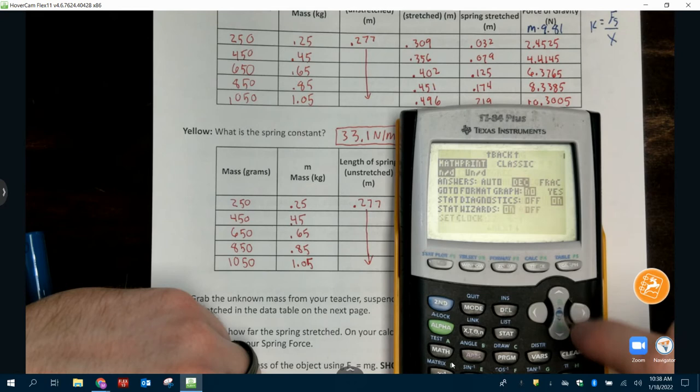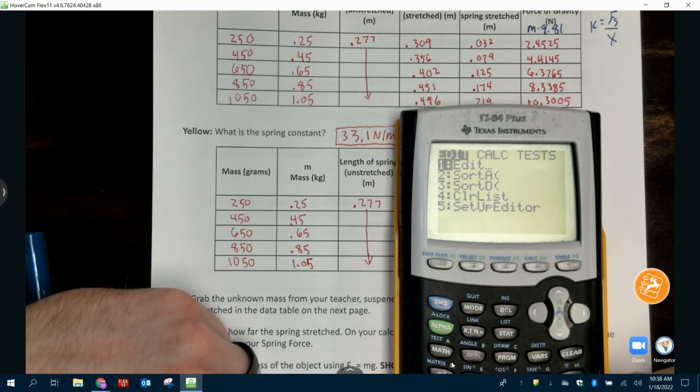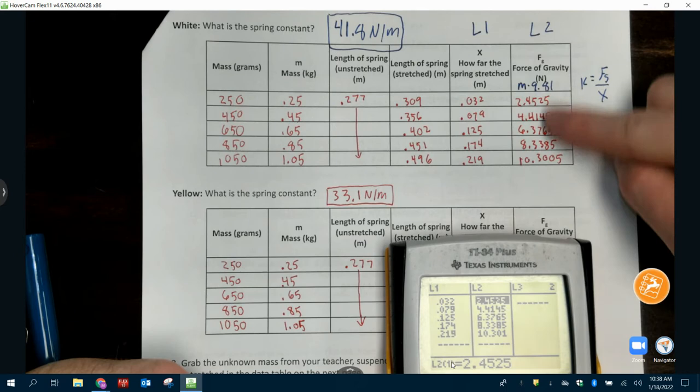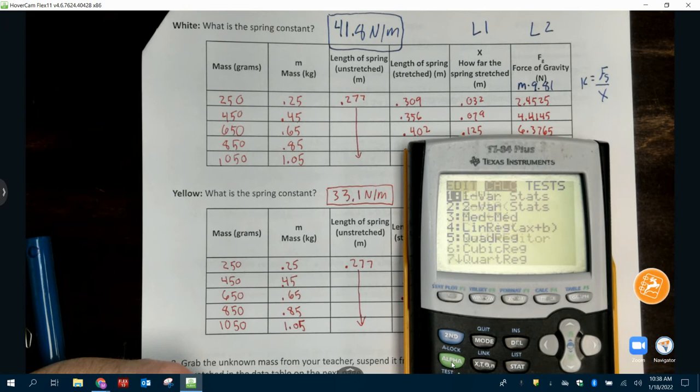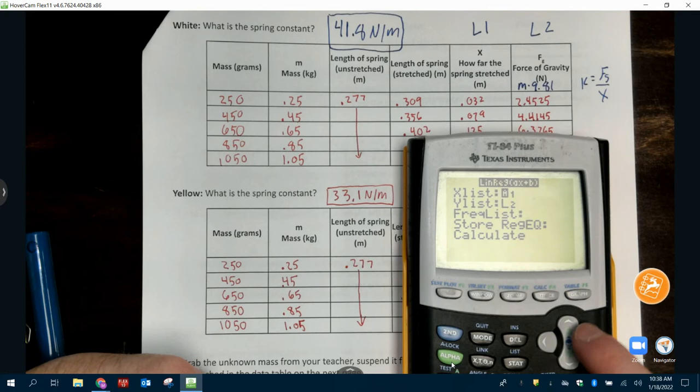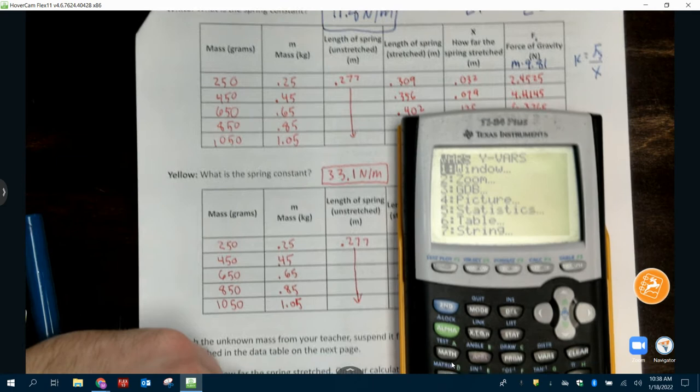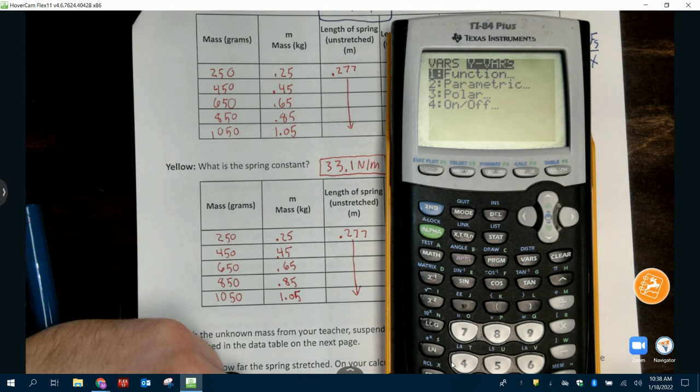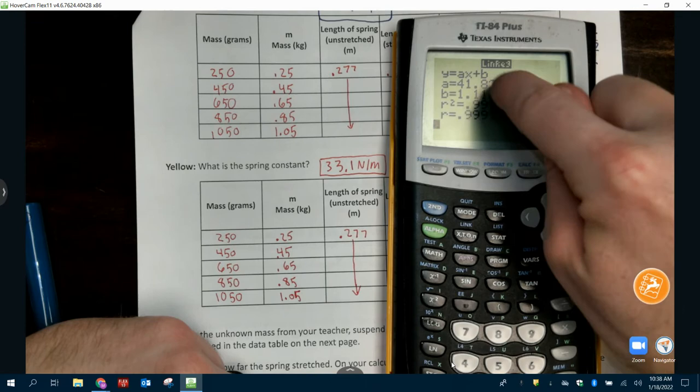So from the beginning, make sure we're in mode, stat wizards on, stat diagnostics on. You go to stat, edit. You plug these numbers in as your X or as your L1. These numbers as your L2. From here, you press stat. You go to the right to calc. We're going to go to linreg. In store reg eq, we press vars or variable. You go to the right, press enter twice. Once that's there, you press calculate.